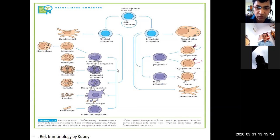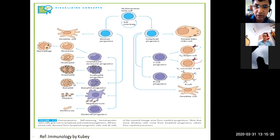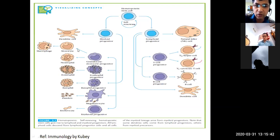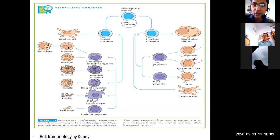The myeloid progenitors differentiate into a basophil progenitor, which becomes the basophil. There is also an eosinophil progenitor, which differentiates into eosinophils. The granulocyte-monocyte progenitor differentiates into either neutrophils or monocytes. These monocytes are further subdivided into macrophages, which are phagocytic cells.